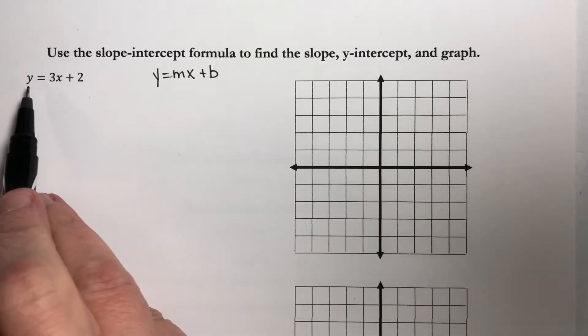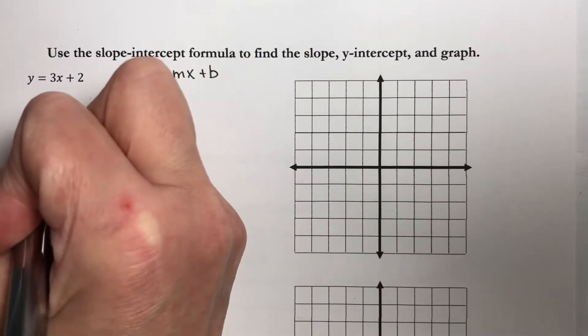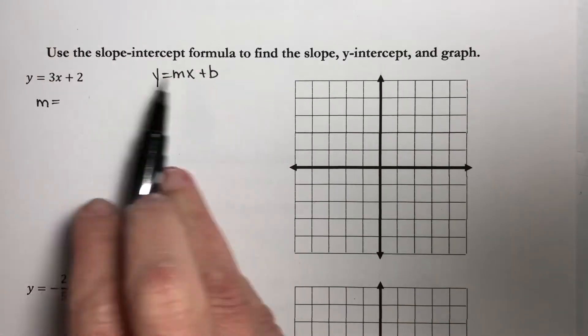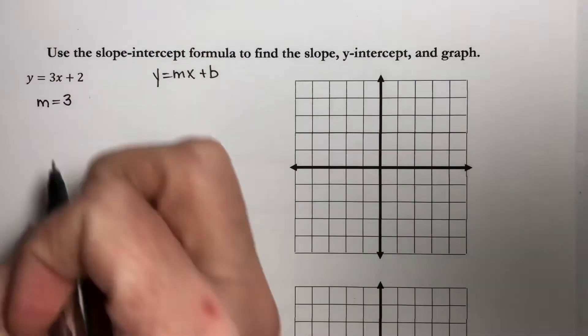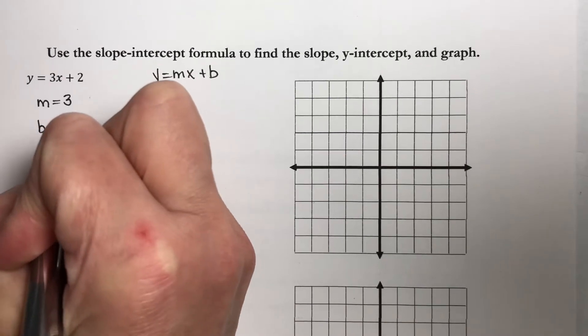If you compare this formula to here, you can see that your m is the coefficient of x, so it is 3. And b is 2.